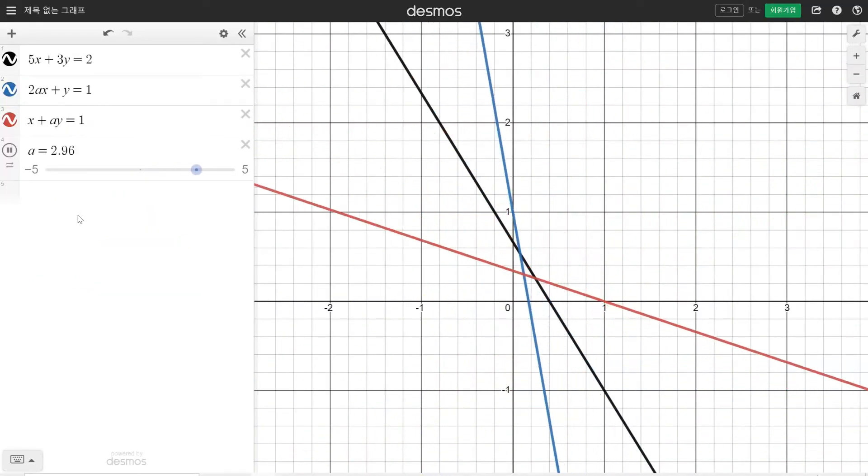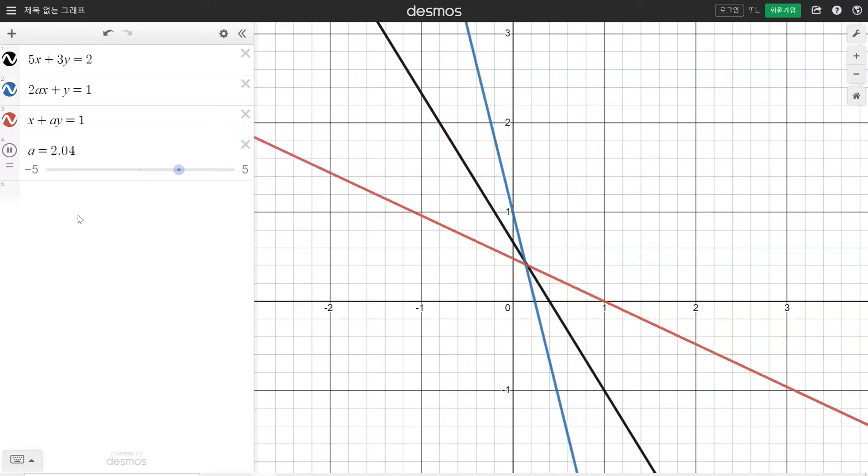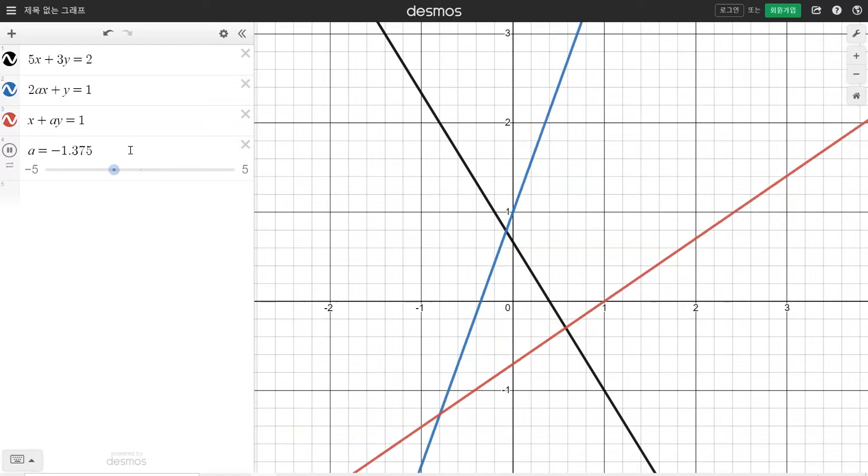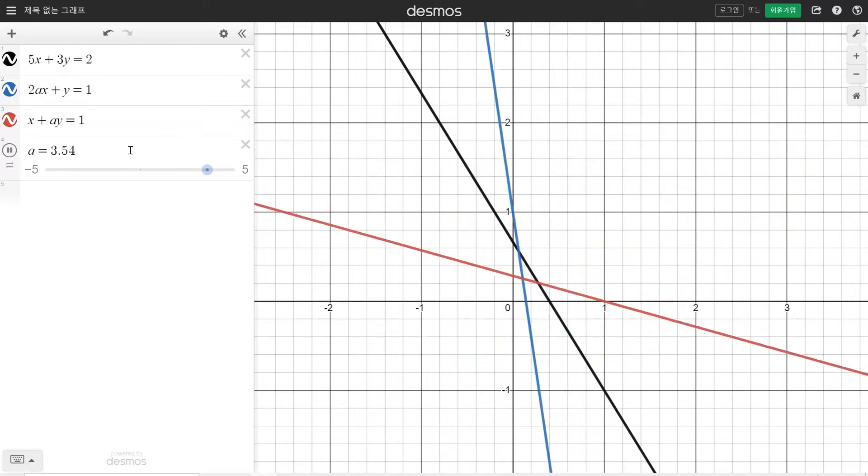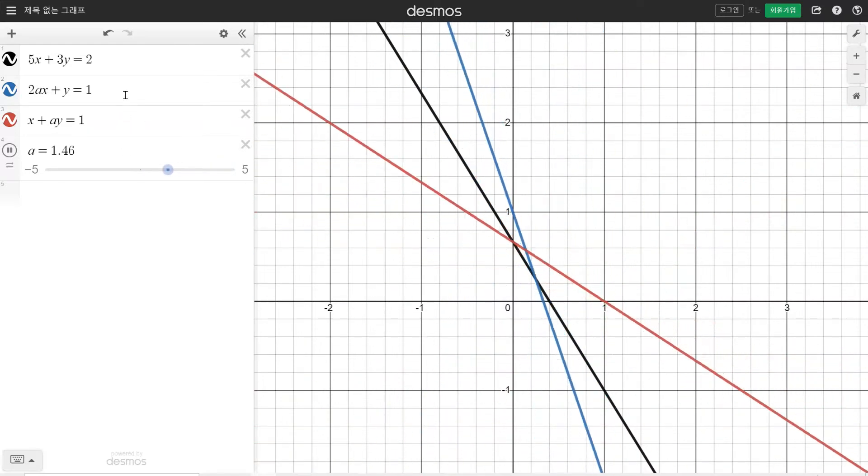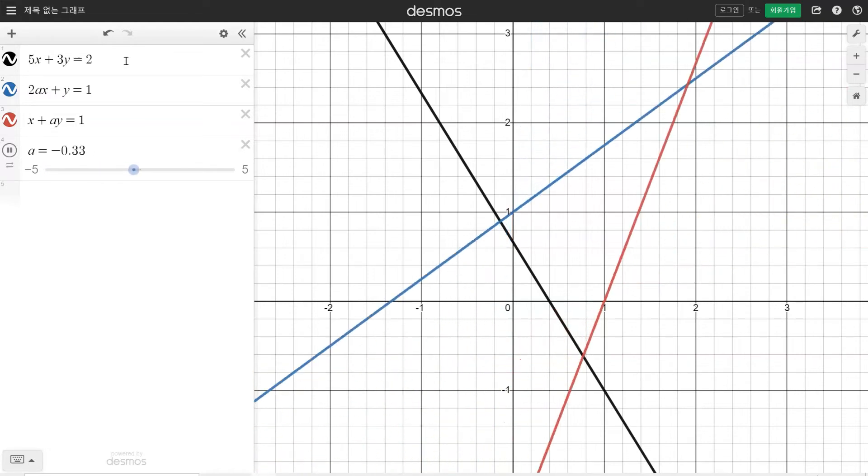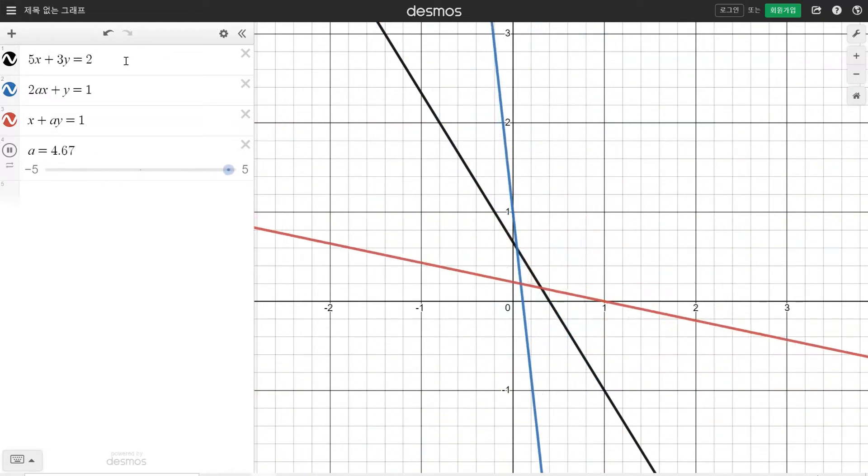You can observe these changing lines visually using Desmos Graphing Calculator. By changing the parameter A here in this slider, you can see that two lines change, the blue one and the red one containing A, whilst the black line is fixed since it does not contain A.